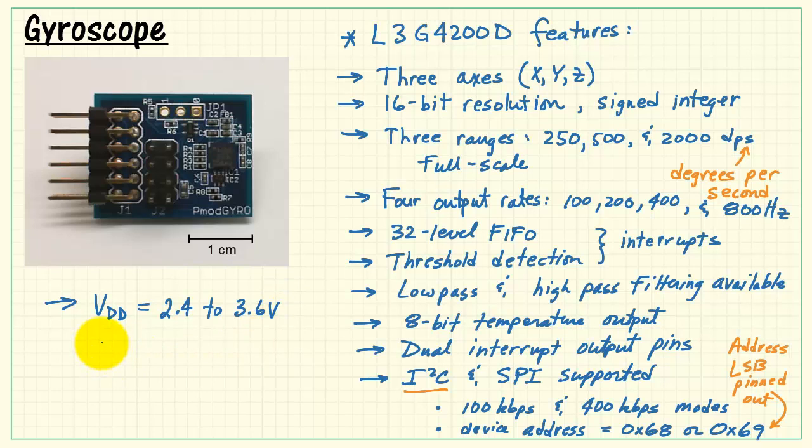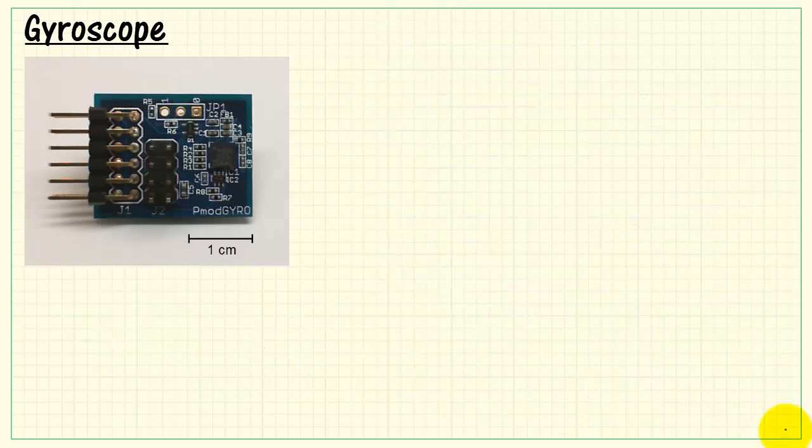The device address is hexadecimal 68 or hexadecimal 69. The least significant bit of the address is pinned out, so you can select it. Supply voltage is 2.4 to 3.6 volts, and you want to make sure you have a clean DC supply.